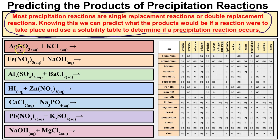We need to predict the products of this precipitation reaction. We have silver nitrate dissolved in water reacting with potassium chloride dissolved in water. These are ionic compounds: silver is +1, nitrate is −1, potassium is +1, chloride is −1, and positives attract negatives. So the positive silver ion is going to bond with the negative chloride ion to produce AgCl, and the positive potassium ion bonds with the negative nitrate ion to produce KNO3.